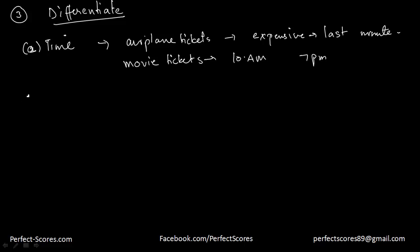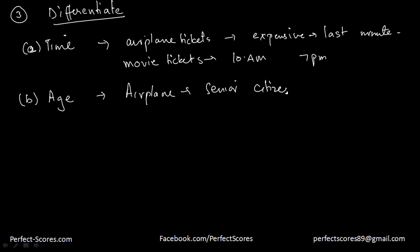Another way to differentiate consumers is by age. For example, with airplane tickets, there is a senior citizen discount. Anyone above the age of 65 is charged less. So this is differentiating on the basis of age.